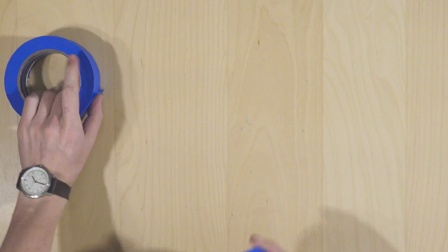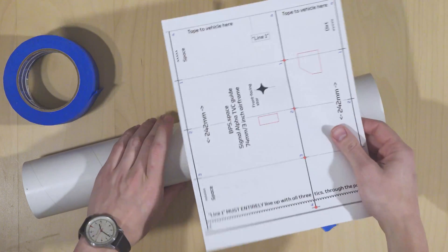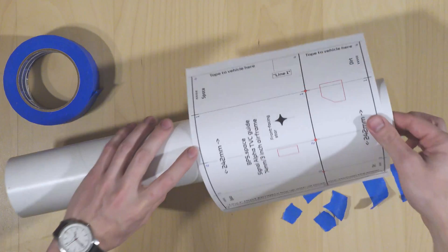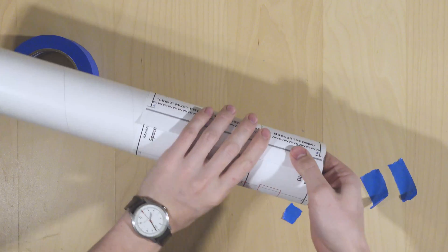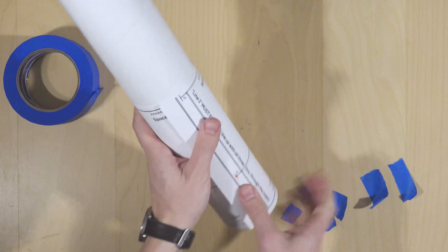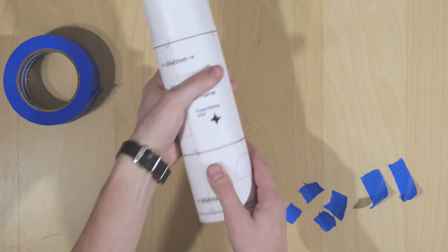To start, we'll peel off some tape and rip it into many smaller pieces. Then, we'll take the TVC cutout guide and we'll wrap it all the way around the airframe. What we want to make sure of is that the bottom and top of the paper are in line with each other, so that when they overlap, the sides of the paper are totally parallel.